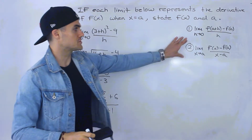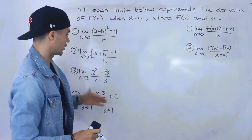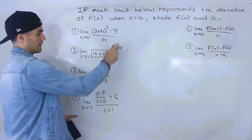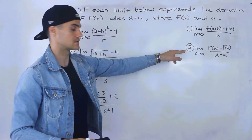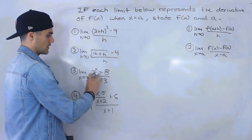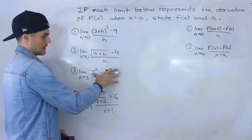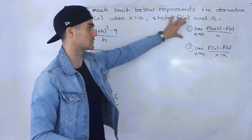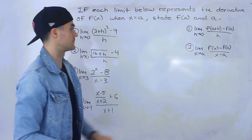If you're not using this alternative definition or haven't been taught it, you can ignore the limits that are going to be in that format. Notice how you can tell before even starting that limits one and two are in the first definition format, and limits three and four are in the alternative format. What I'm going to do with limits three and four is, after we figure out f(x) and a, I'll also convert them into the first format, just in case you're only using that definition.